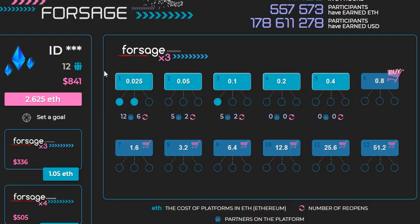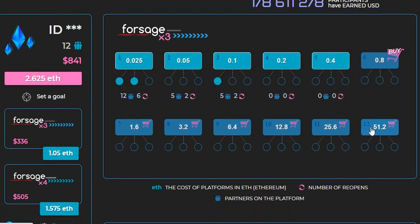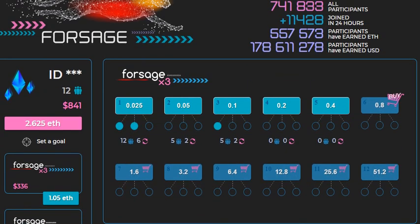ForSage has 12 levels, and each level is a multiple of the first one. Starting at 0.05 ETH, it doubles: 0.05, 0.1, 0.2, 0.4, 0.8, 1.6, 3.2, 6.4, 12.8, 25.6, and 51.2 ETH. It keeps on doubling, so on level 12 it costs about 51.2 Ethereum to upgrade. There is much money to be made here, but it is also very pricey.